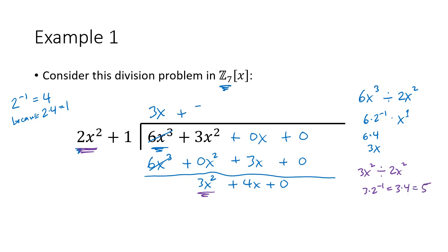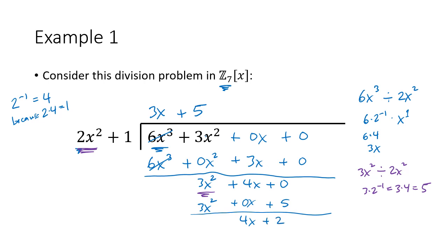So the next term of the quotient is 5. Multiplying: 5 times 2x squared gives 3x squared — that matches up — and 5 times 1 is 5. After subtracting: 4 minus 0 is 0, and 0 minus 5 is negative 5, which is the same as positive 2 in Z7. So the remainder is 4x plus 2. The quotient is 3x plus 5 and the remainder r of x is 4x plus 2.